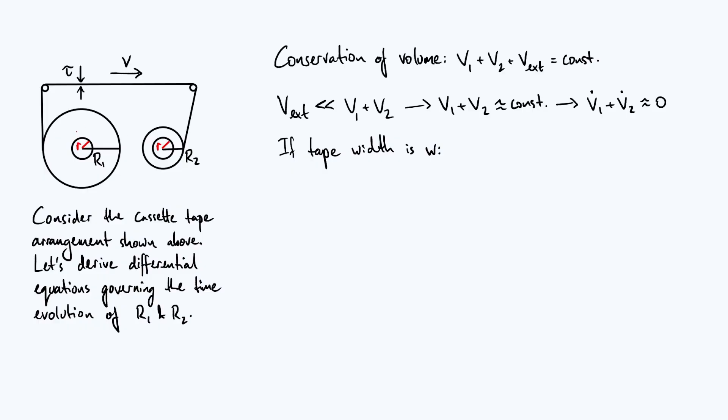So first of all, notice that I've just marked these two little r values onto the diagram. The lowercase r is the internal radius of each spool. Those are assumed to be the same. And I've also said that the width of the tape is w as a constant width throughout the entire length of the tape.